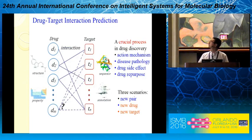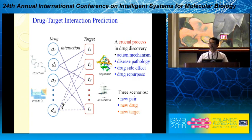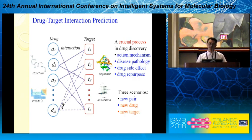A very classic problem is to try to predict drug-target interaction. This is a crucial process in drug discovery. It can help find the drug action mechanism and disease pathology, drug side effects, and is also used in drug repurposing.